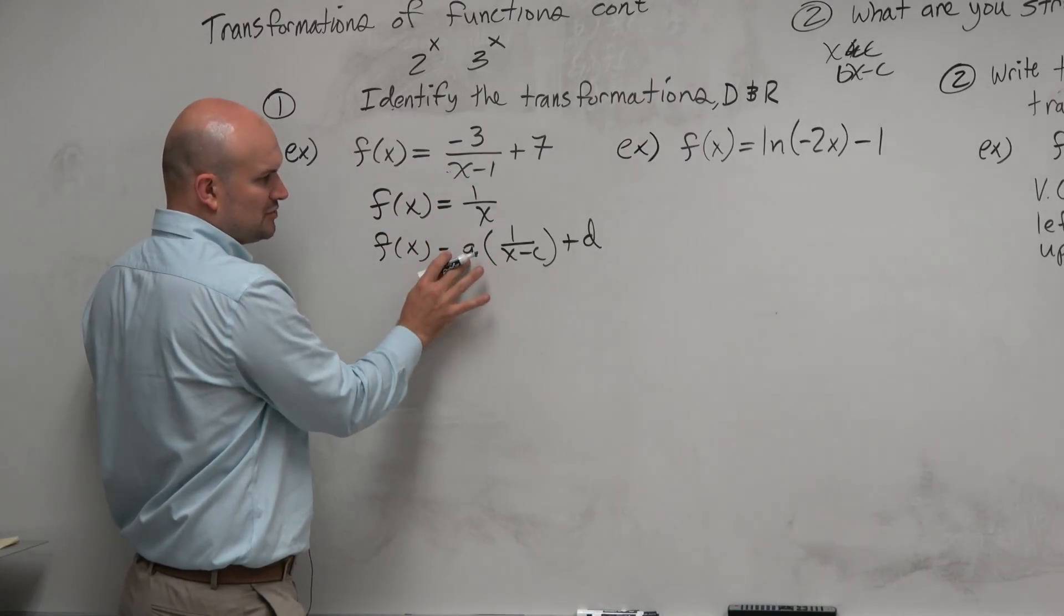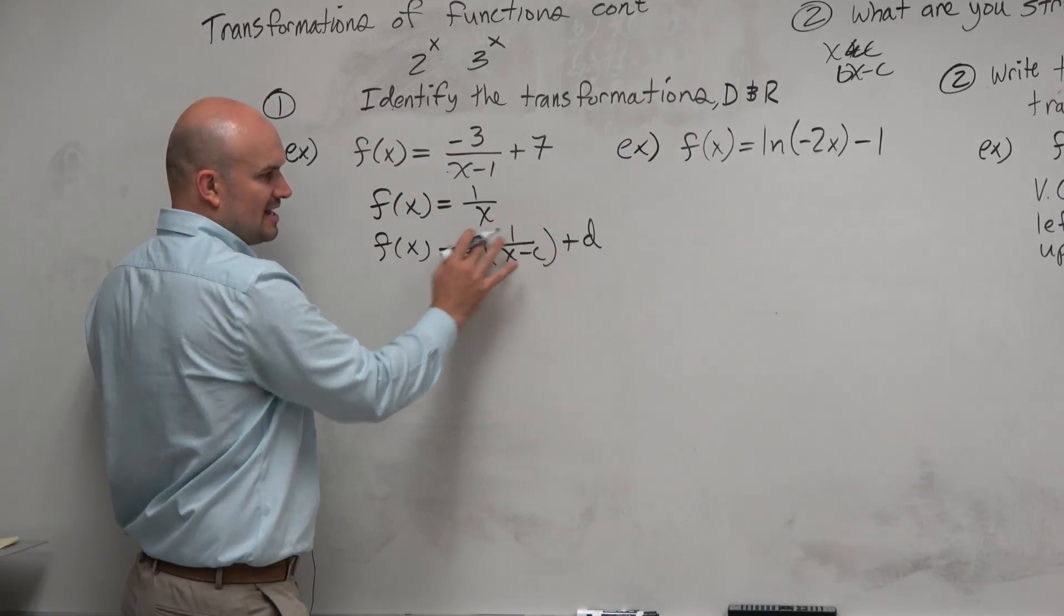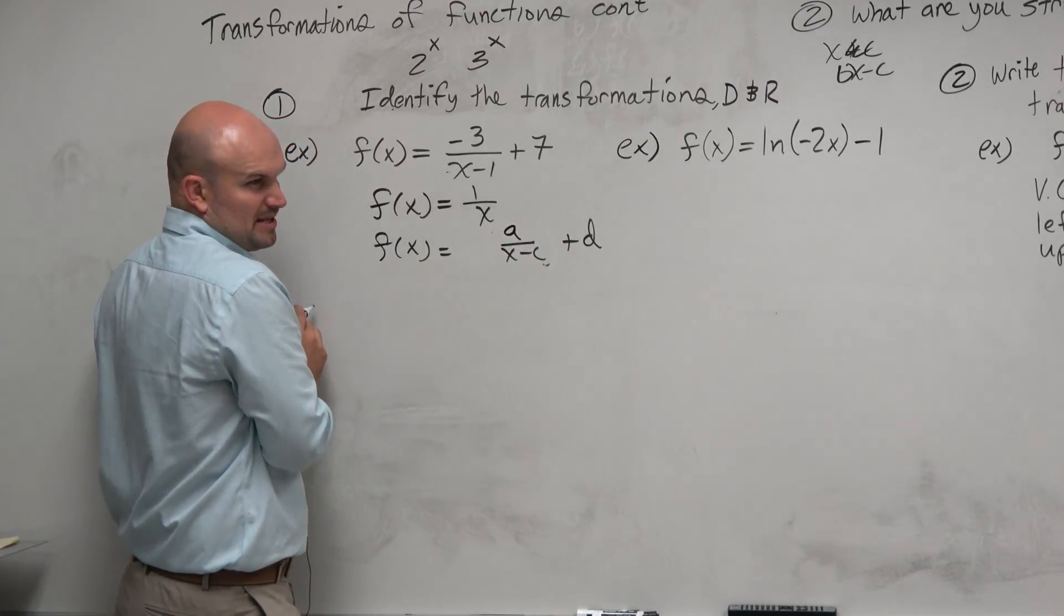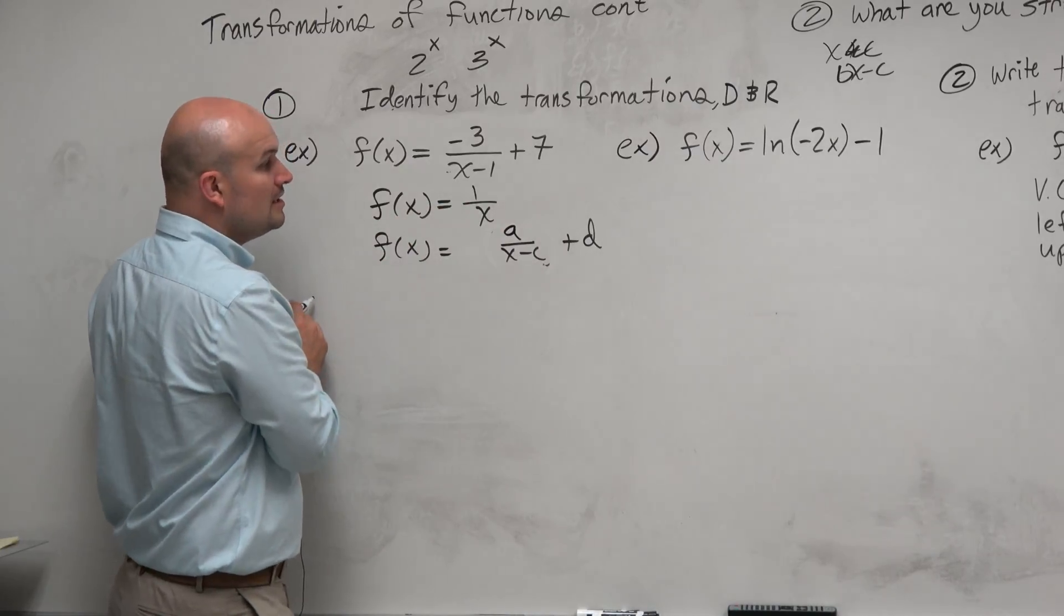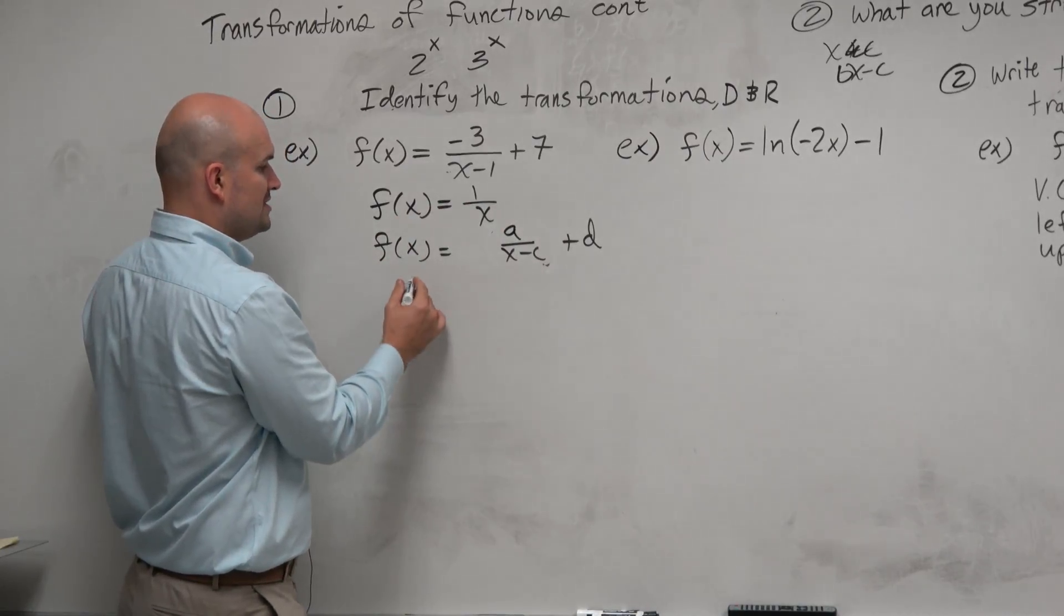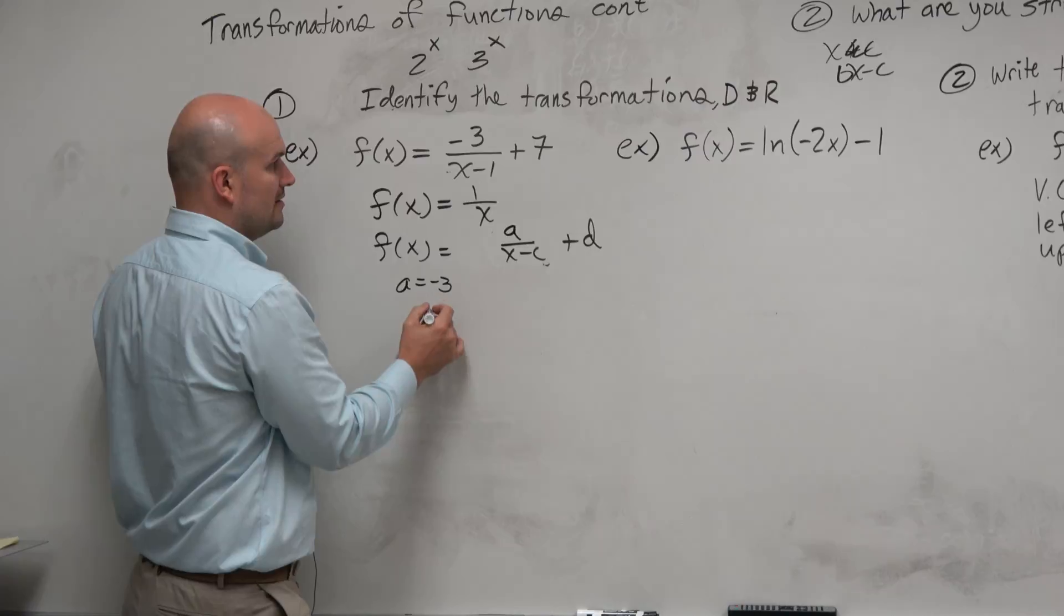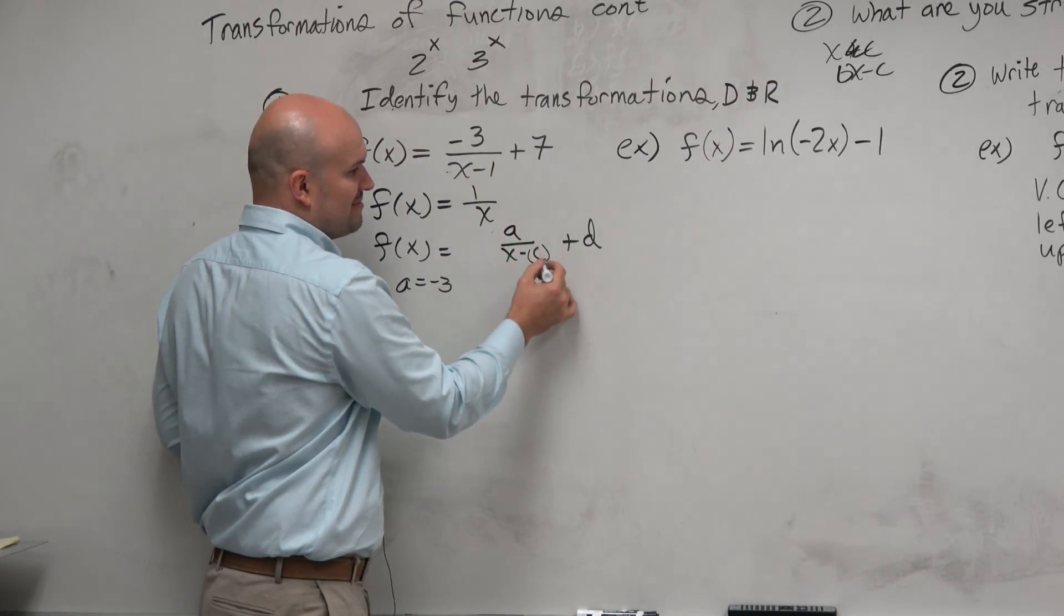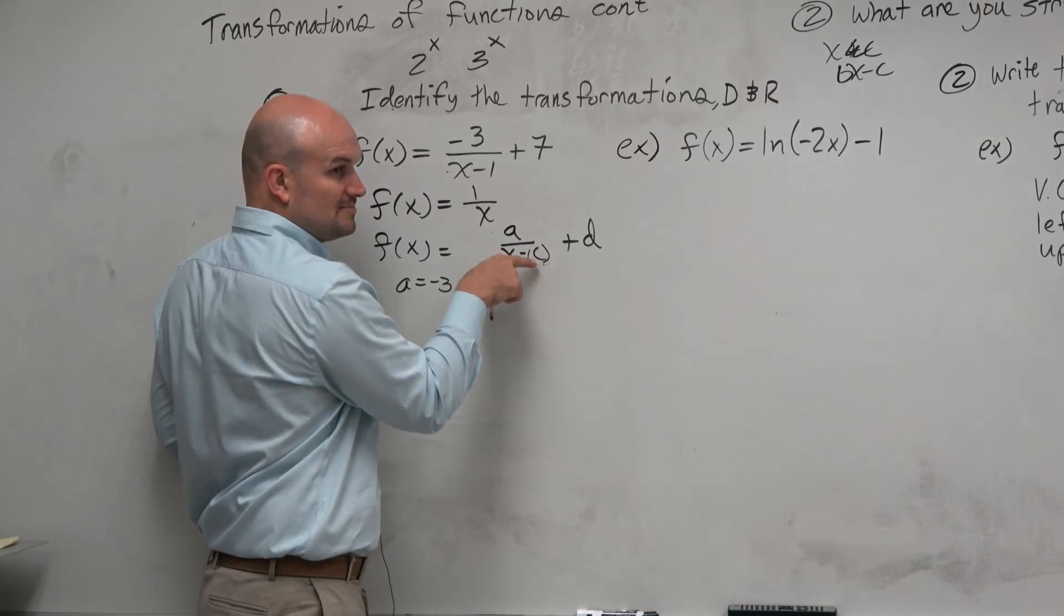Well, again, guys, what happens if you multiply a over 1 times that? It really just becomes up top. Do you guys see that? Same again. OK, so the a is really kind of up top. So now you guys can see, oh, OK, so a is equal to negative 3.